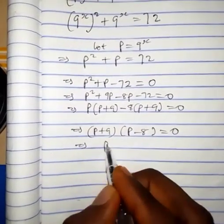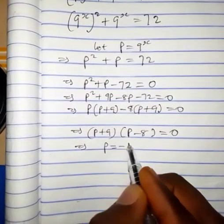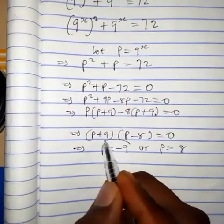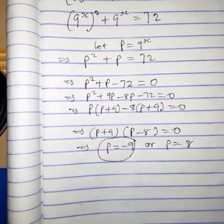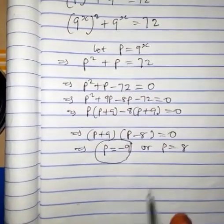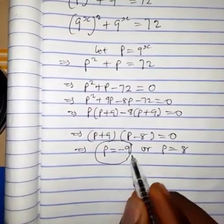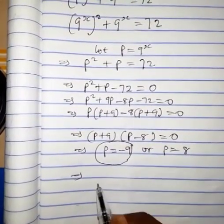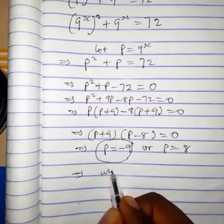This implies that p equals negative 9 or p equals 8. We're going to ignore p equals negative 9 because it would give a negative logarithm, which doesn't exist and is undefined. So we consider when p equals 8.